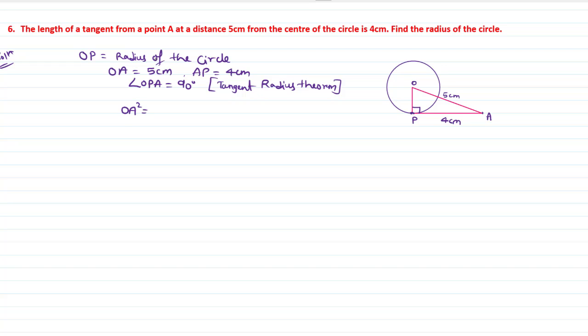OA square is equals to OP square plus AP square. OA, its value is 5 cm. It is square. OP, we have to find this one because OP is the radius here. OP square plus AP, its value is 4 cm. It is square.